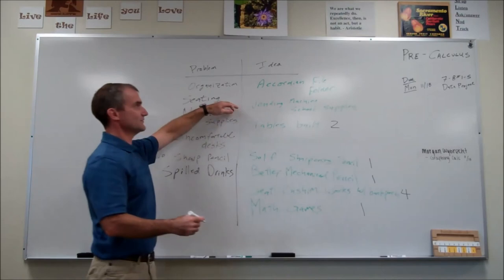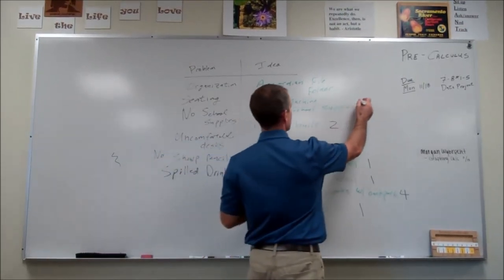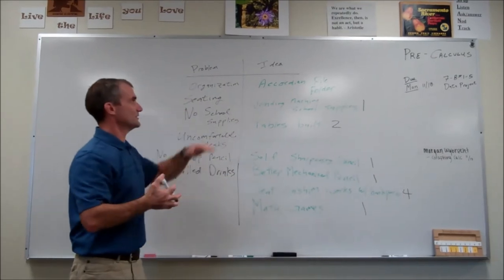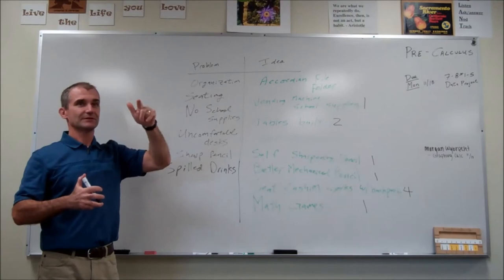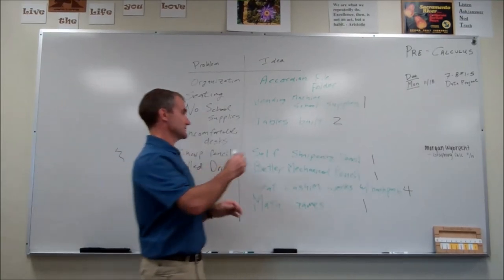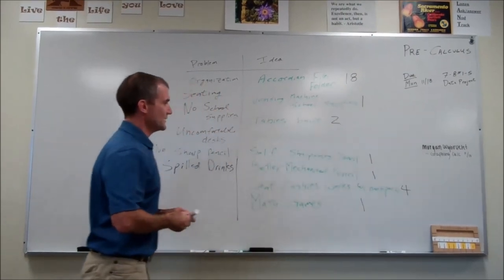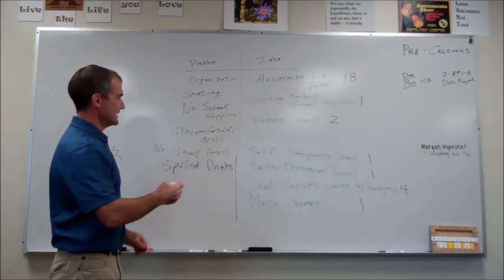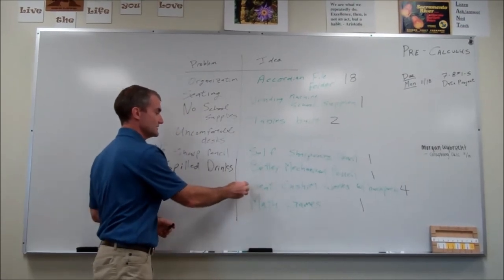Appending machine for school supplies. One person there. And what about accordion file folder? Oh, that's unanimous. 18. So I guess this is our number one pick. Maybe we'll start working on that. And then next up is the seat cushion. So we can work on two ideas simultaneously.